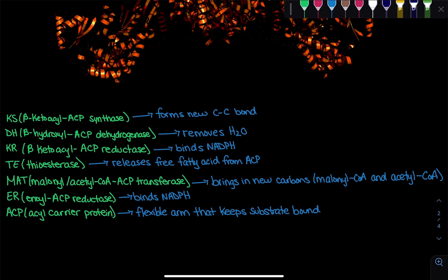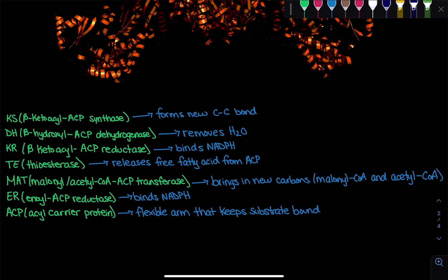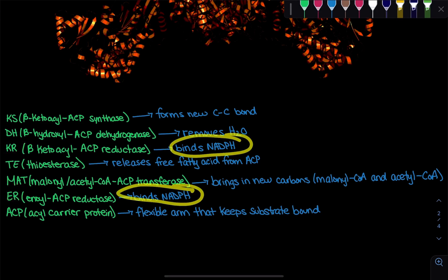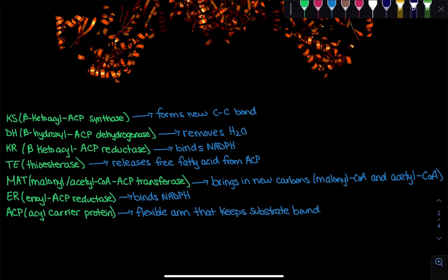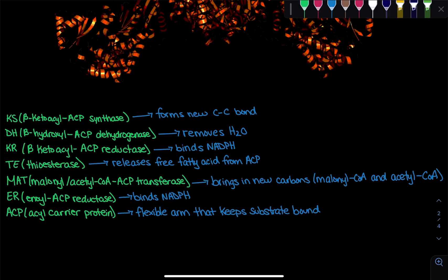The KR reduces ketoacyl ACP into beta-hydroxy acyl ACP. To sum it up: both KR and ER bind NADPH but have different substrate specificities — the ER binds enol ACP, while the KR binds ketoacyl ACP.